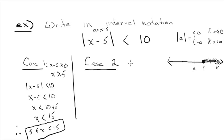Interval from case 2, remember case 2 is A is less than 0, and remember A is x minus 5, so x minus 5 is less than 0, which means x is less than 5.